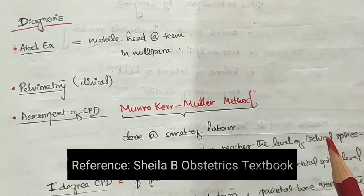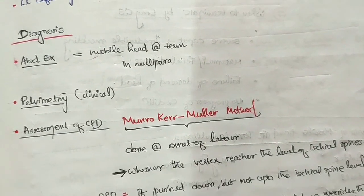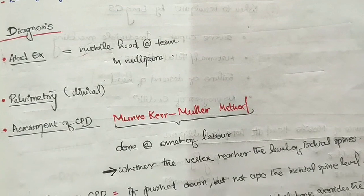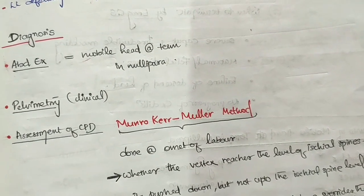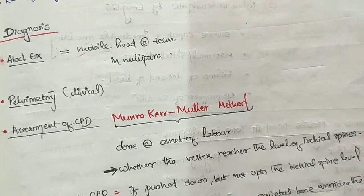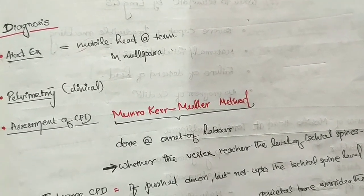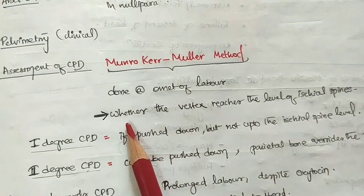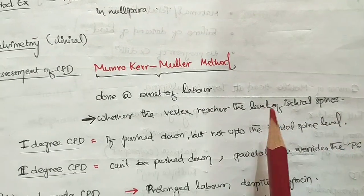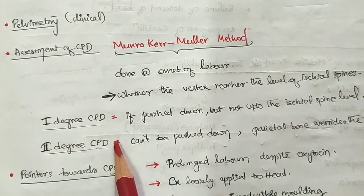The Müller-Munro-Kerr maneuver: we push the head of the baby with the left hand while keeping two fingers inside the vagina at the level of the ischial spine with the right hand. We assess whether the vertex reaches the level of the ischial spine. This is done at the onset of labor.